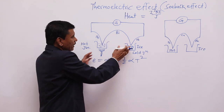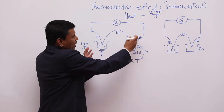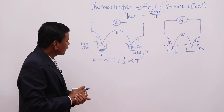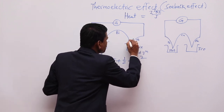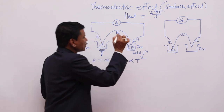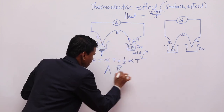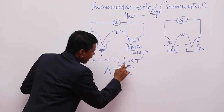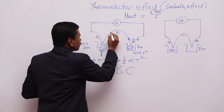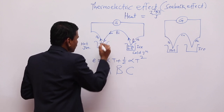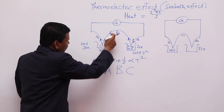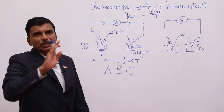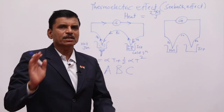In a thermocouple, when two junctions are kept at different temperatures, DC current is produced. In the antimony-bismuth thermocouple, current flows from antimony to bismuth through the cold junction — remember this as ABC: Antimony to Bismuth at Cold junction. At the hot junction, current flows from bismuth to antimony. This is why the galvanometer shows deflection.